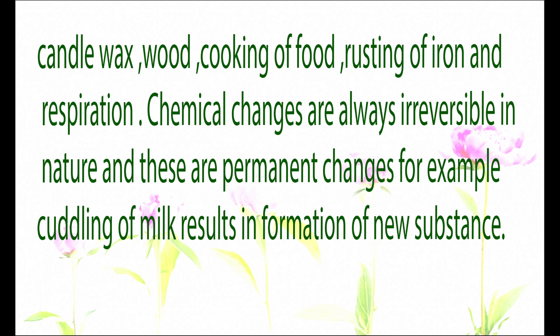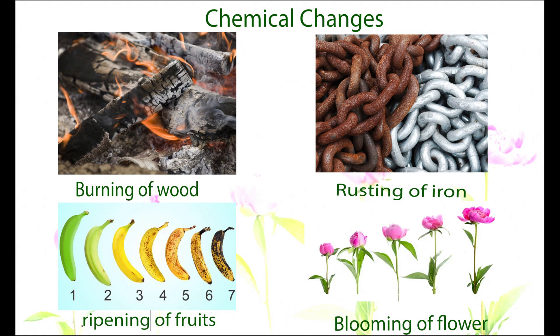Curdling of milk results in the formation of a new substance. After burning wood, we get ash as the final product, which cannot be changed back into wood. Rusting of iron cannot be reversed to its original form. Ripening of fruits and blooming of flowers are also examples — once a fruit is ripe or a flower is in full bloom, we cannot get back the raw fruit or the bud.